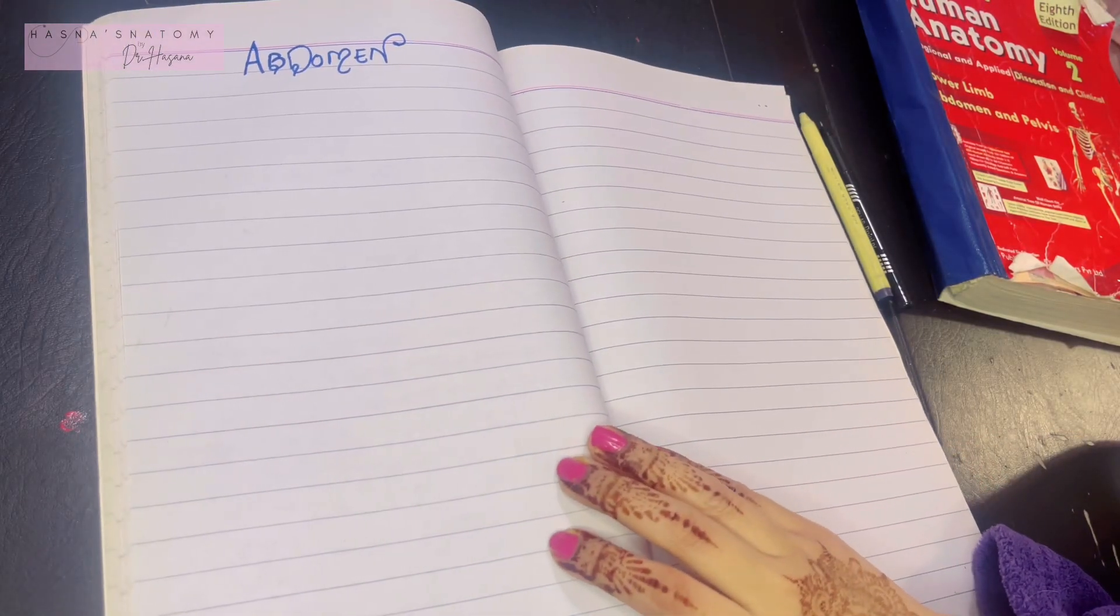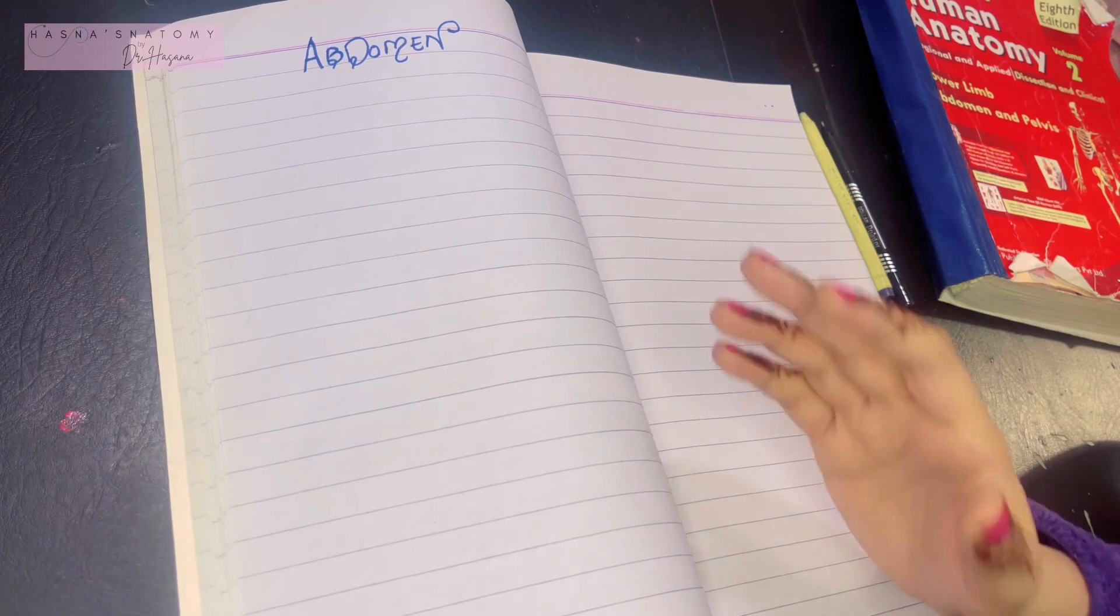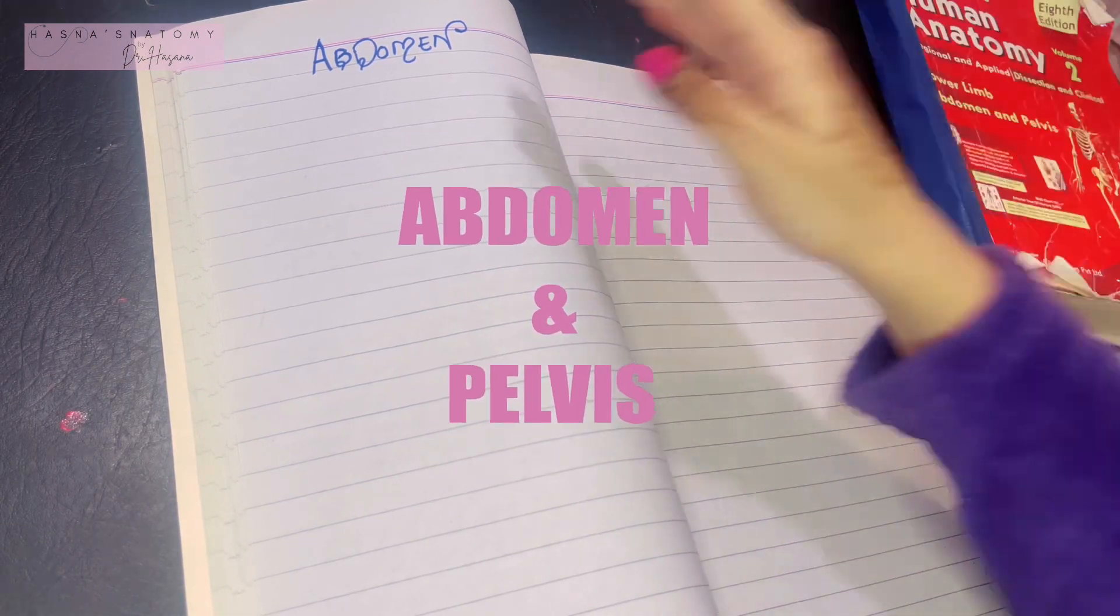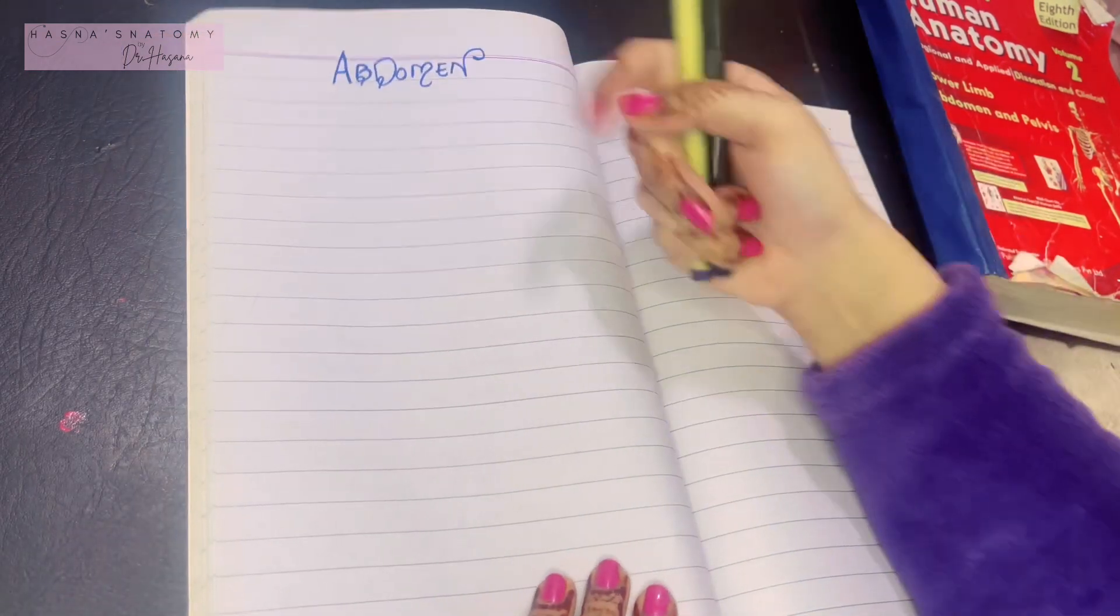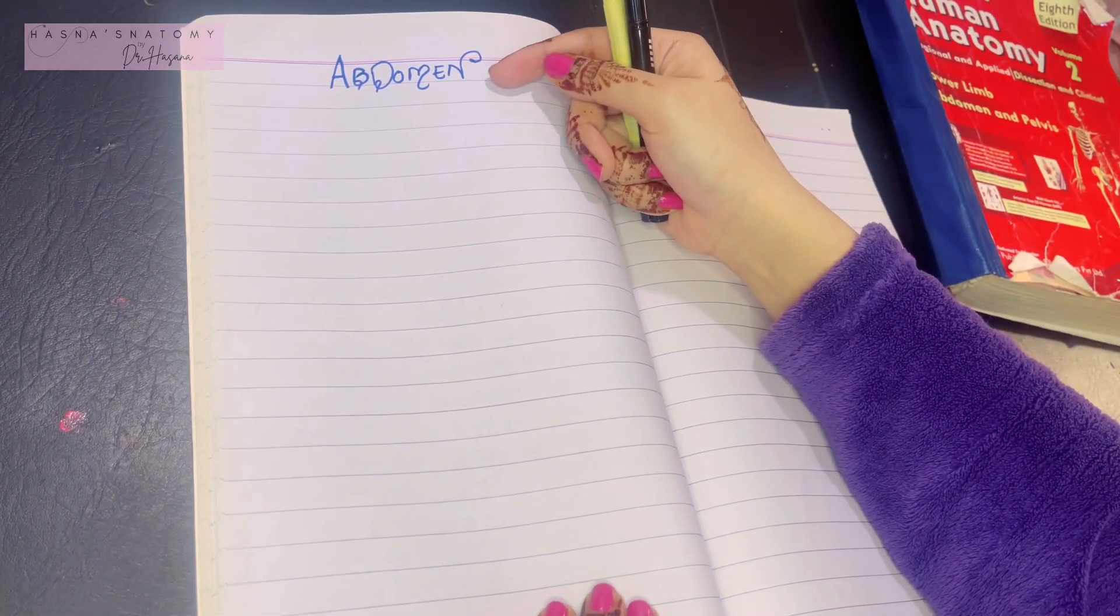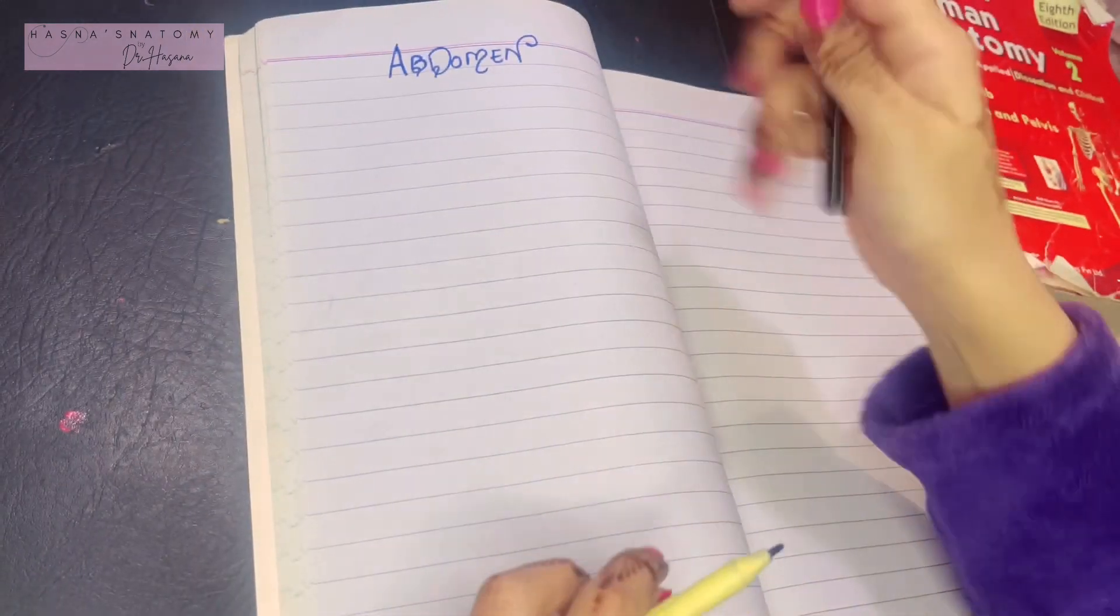Assalamu alaikum, this is Dr. Hasna, and today we're finally beginning another region on our channel: abdomen and peritoneum. Let's begin with the abdomen first. Where is the abdomen exactly located? The abdomen is located just beneath the diaphragm.